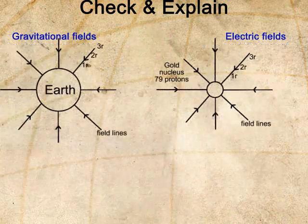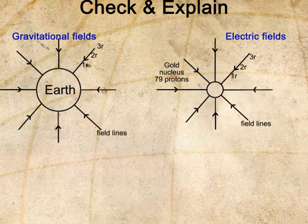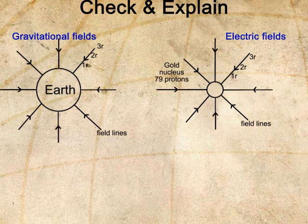You can see that all points around the Earth at a distance of one radius from the centre have the same potential, and all points two radii from the centre have the same potential, and so on.